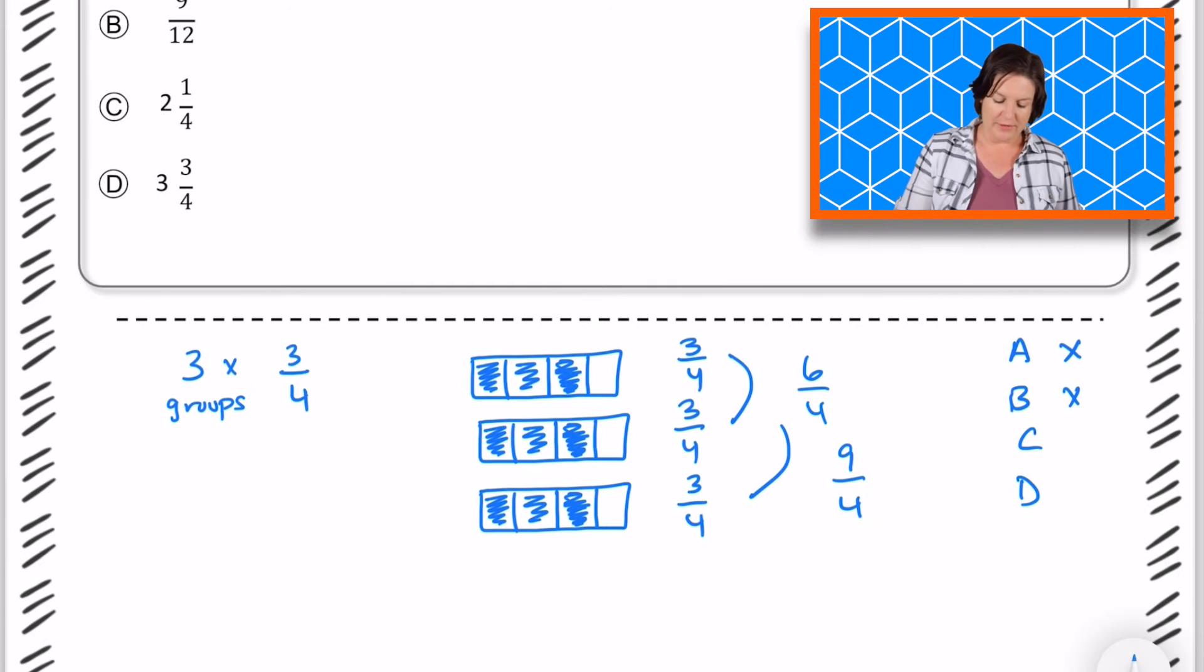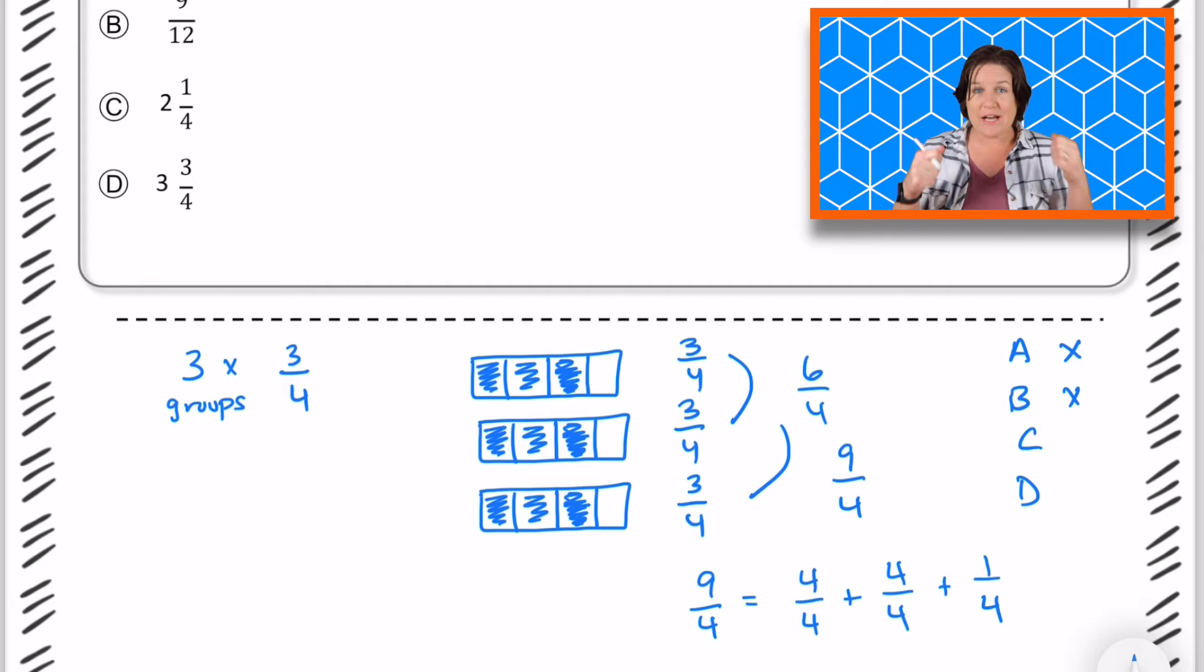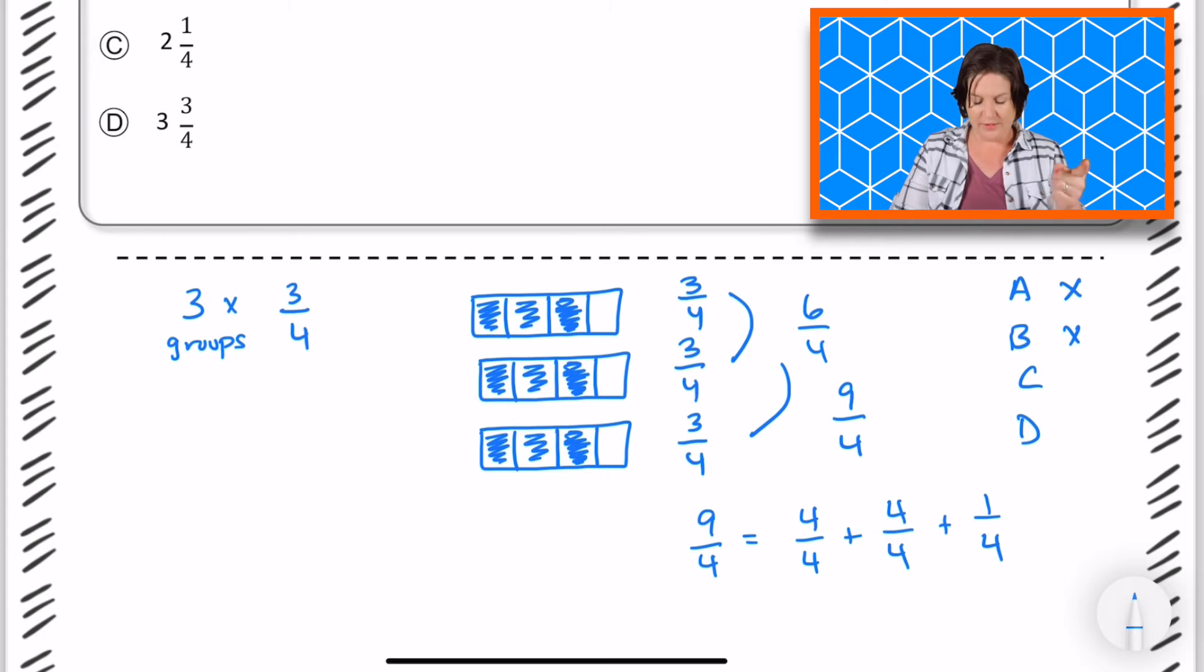So the way that we can think about this is 9/4 could be decomposed into 4/4, that would be a whole. 4/4, that would be 8/4 plus another fourth. So we can decompose or break down 9/4 into 4/4 plus 4/4 plus 1/4. Now 4/4 is one whole, and 4/4 is one whole. Therefore we have two wholes and 1/4.